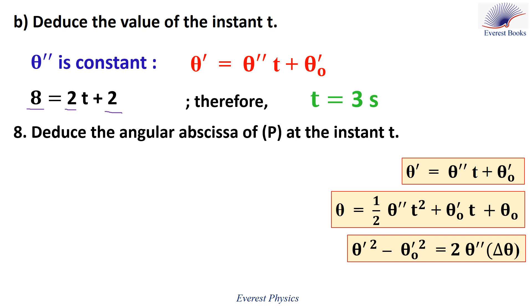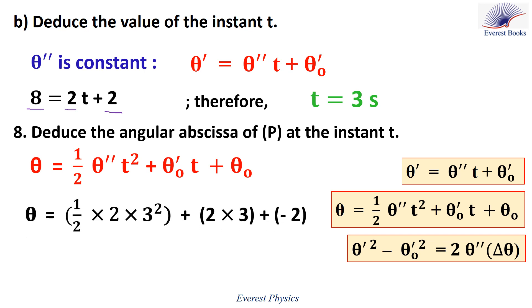Part eight: find the angular abscissa of P at instant t. Using the second equation, replace θ'' by 2, t by 3, θ'₀ by 2, and θ₀ by −2. Therefore at instant t the angular abscissa equals 13 radians.